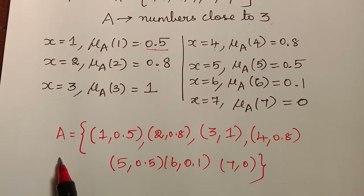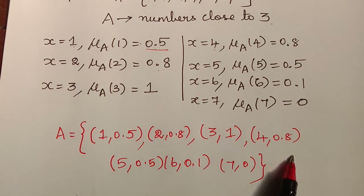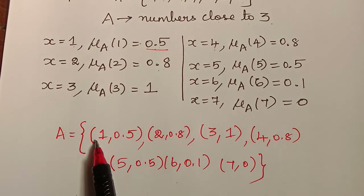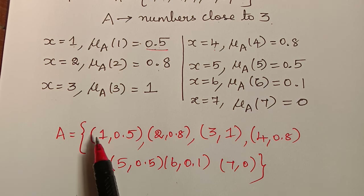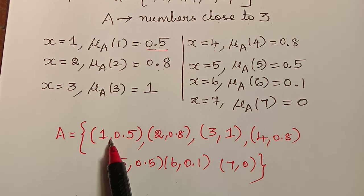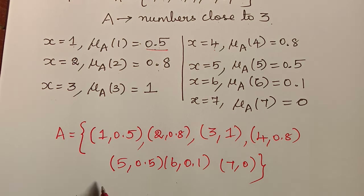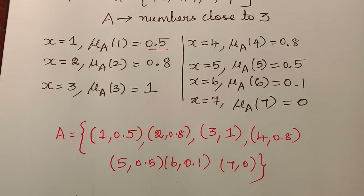Therefore, a fuzzy set is a collection of ordered pairs where one element of the pair represents the element and the other represents its membership function value. In our next video we shall consider one more example and learn more definitions on fuzzy sets.